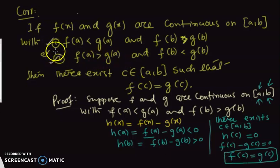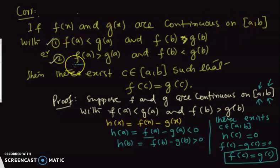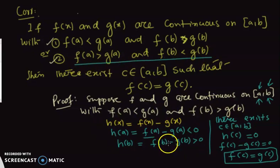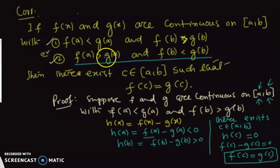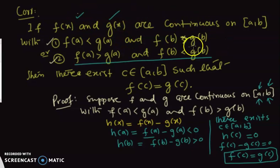You can also handle the other part. If f(x) and g(x) are continuous on [a, b] and the second condition holds, you repeat the same argument. The only change is that h(a) will be positive and h(b) will be negative. You can repeat the argument and show that if one of these conditions holds along with continuity of f and g, you can find a c such that the two functions coincide.